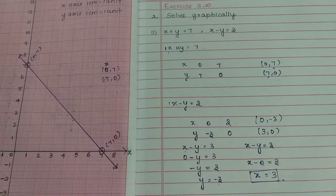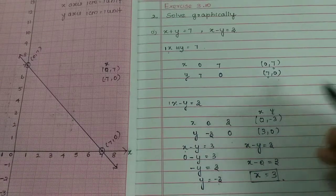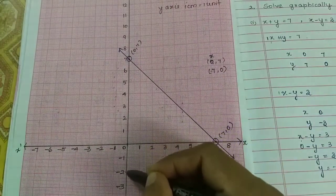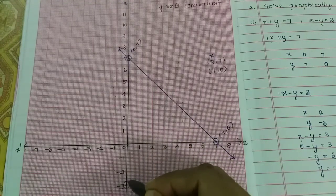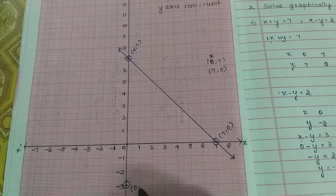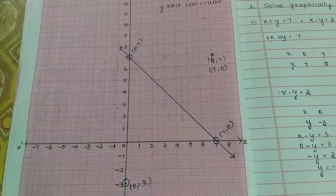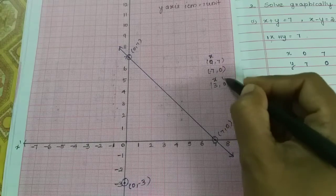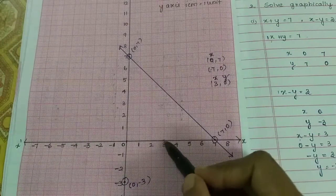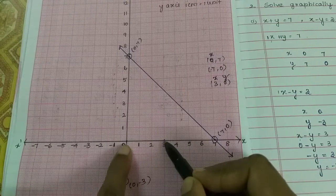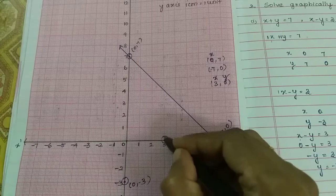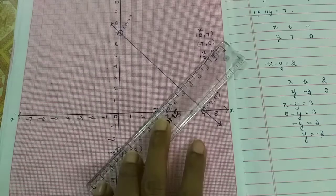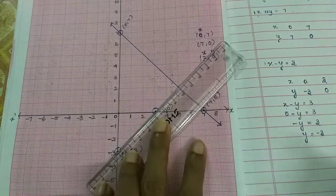So now we will plot these points on the graph. First is (0, minus 3): x-axis is 0, y-axis is minus 3. Next is (3, 0): x-axis is 3, y-axis is 0 — this point is (3, 0). Now we will join the two points in a line.